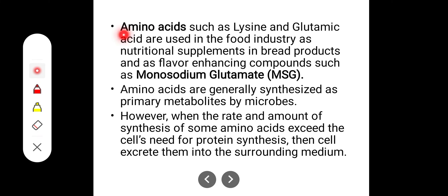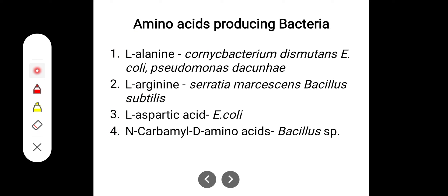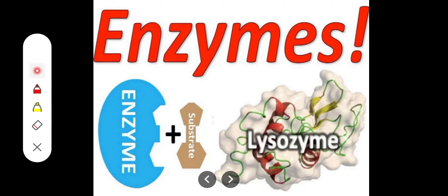Amino acids can also be produced by microorganisms. Amino acids such as lysine and glutamic acid are used in the food industry as nutritional supplements in bread products and as flavor-enhancing compounds such as monosodium glutamate (MSG). Amino acids are generally synthesized as primary metabolites. When the amount synthesized exceeds the cell's need for protein synthesis, the cell excretes them into the surrounding medium. Examples: L-alanine from Corynebacterium, E. coli, and Pseudomonas; L-arginine from Serratia marcescens and Bacillus subtilis; L-aspartic acid from E. coli.